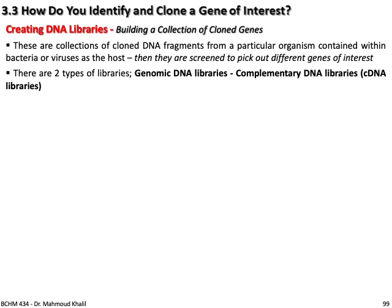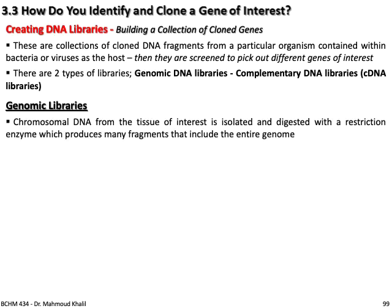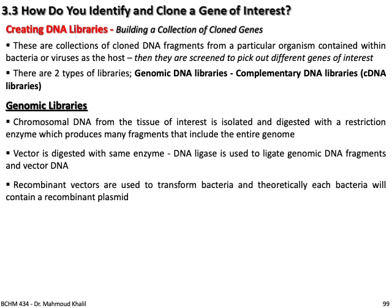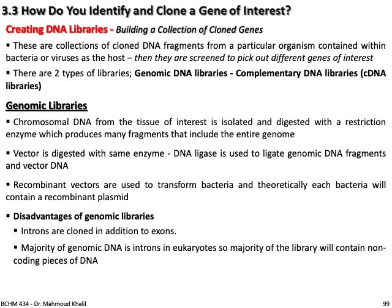Genomic libraries: chromosomal DNA from the tissue of interest, such as liver, is isolated and digested with restriction enzymes to produce many fragments covering the entire genome. A vector is digested with the same enzyme, and the genomic DNA fragments are ligated into the vector DNA. These recombinant vectors are used to transform bacteria. Theoretically, each bacterium will contain a recombinant plasmid with a different piece of the digested genomic DNA.